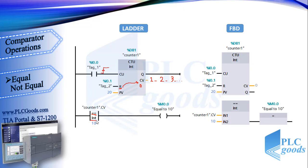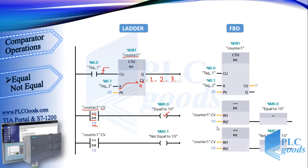For each comparator instruction, we must determine the type of data which are going to be compared. Here I select integer, like my counter. This line compares the CV value of my counter, which is named Counter 1, with 10. So when the counter value is equal to 10, this output will be on. On the right side you can also see its FBD program.